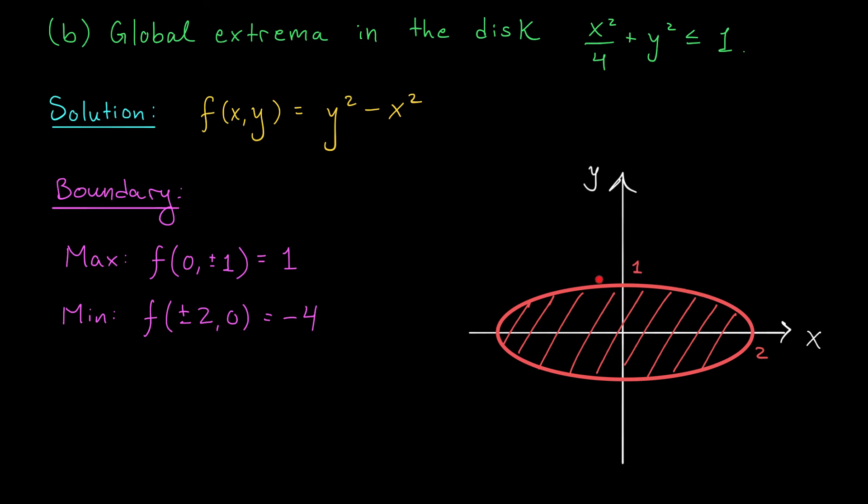After all, if we're optimizing our function over this closed and bounded region, the possible locations for our global max and min are either at critical points inside or at extreme points along the boundary. The boundary is the hard part, but we tackled that in part A. The maximum value on the boundary is 1, the minimum value is minus 4.